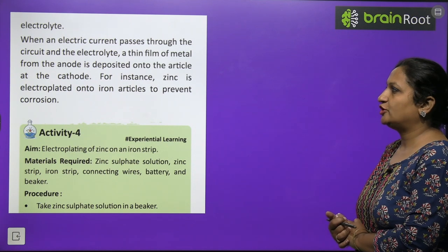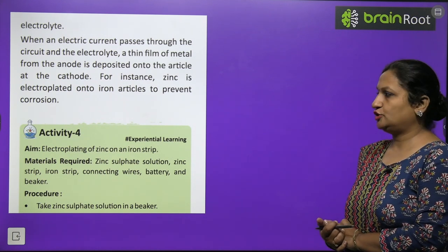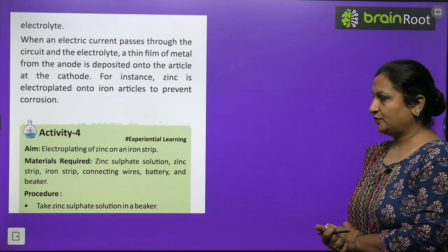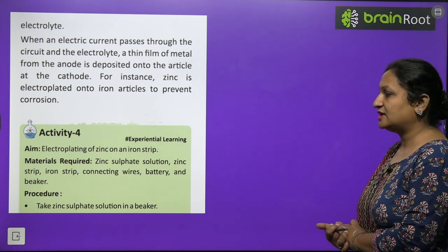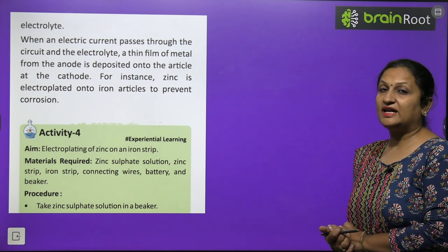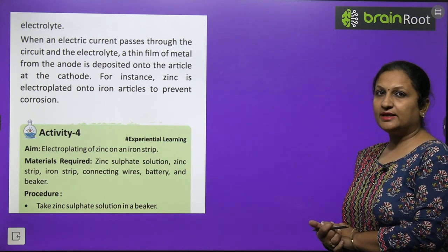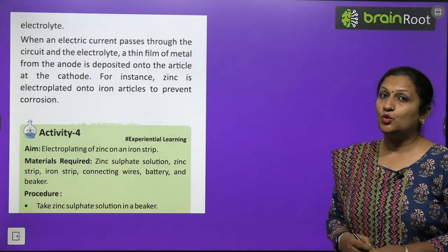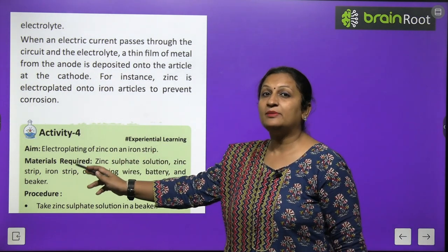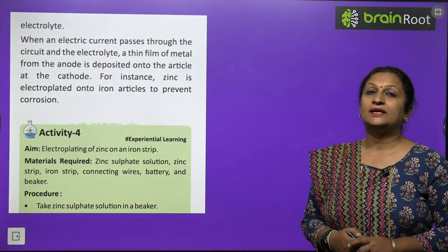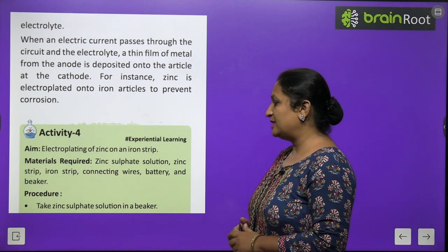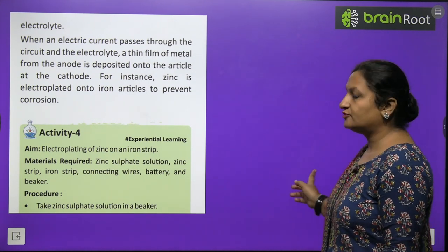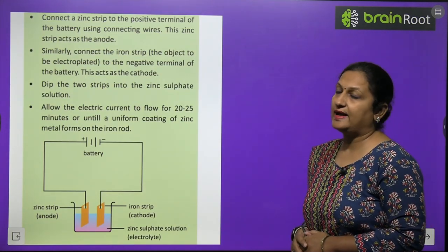Activity: electroplating of zinc on an iron strip. You will need zinc sulfate solution (as the electrolyte), a zinc strip (as the anode), and an iron strip (as the cathode, the object to be electroplated). Also needed are connecting wires, a battery, and a beaker. Take zinc sulfate solution in a beaker. Connect the zinc strip to the positive terminal of the battery — making it the anode. Connect the iron strip to the negative terminal — making it the cathode. Dip both strips into the zinc sulfate solution.